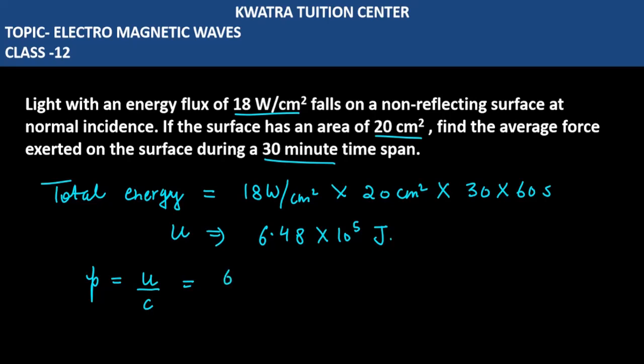So 6.48 into 10 raised to power 5 divided by 3 into 10 raised to power 8. Now you can reduce the value, cancel out the values here. You will get 10 to the power minus 3. 5 and 8 I have solved.